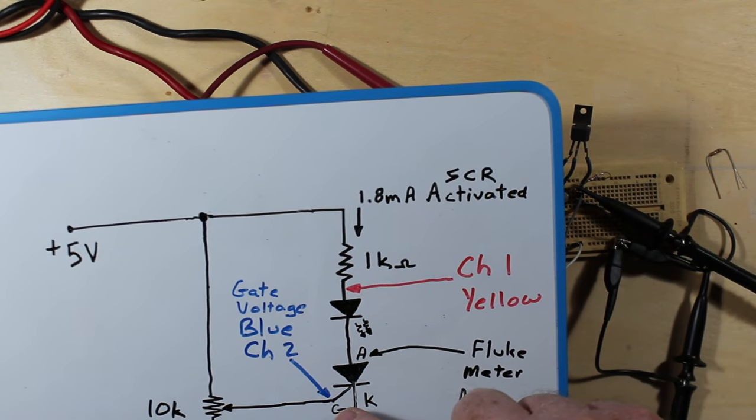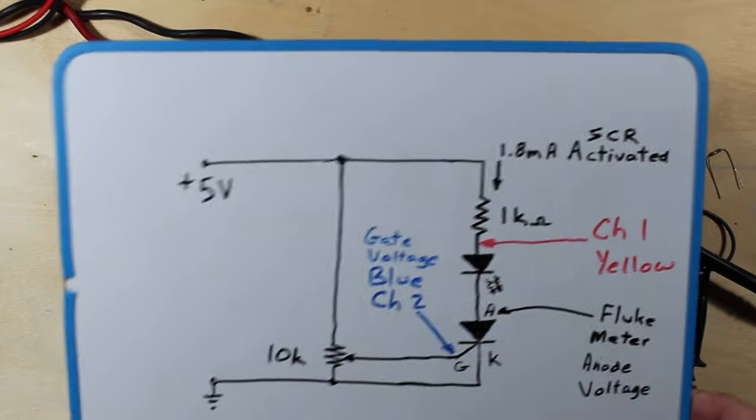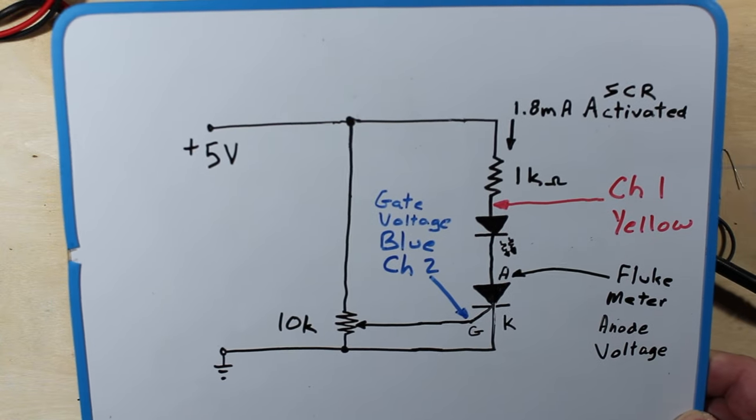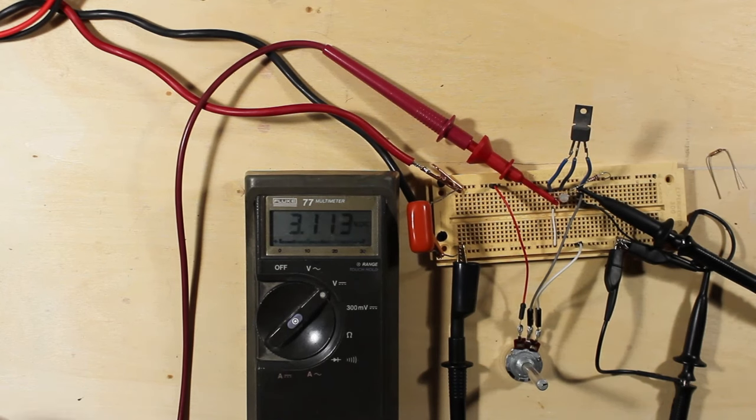But it's the gate voltage here, the blue channel, channel two, that we're quite interested in to see what sort of gate voltage this requires to trigger the SCR.